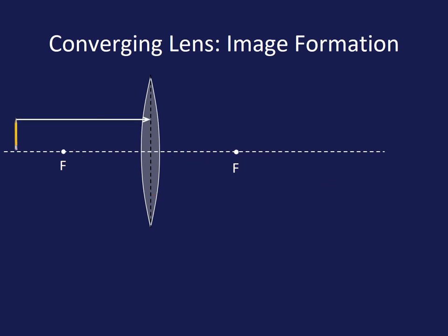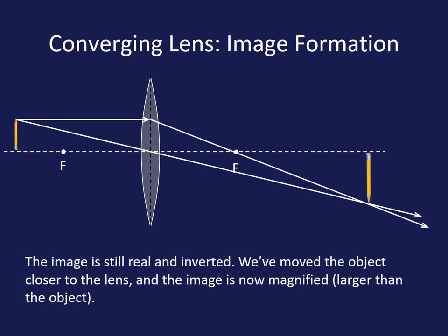The second one, we're actually moving a little bit closer now to our focal point and you'll notice that our image is still inverted but now it's a lot larger. So we still have a real image as well.